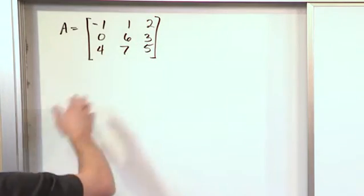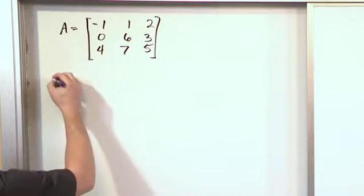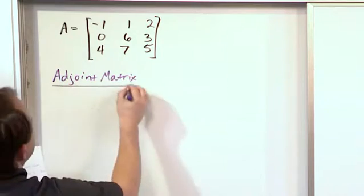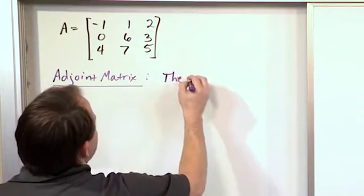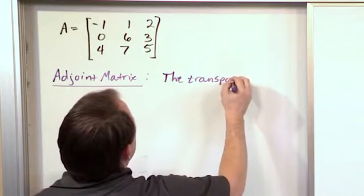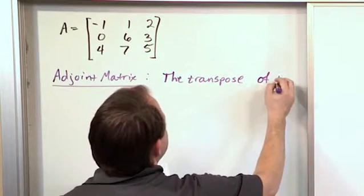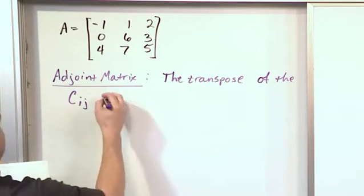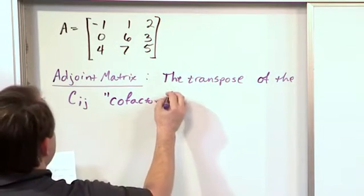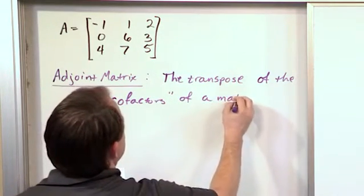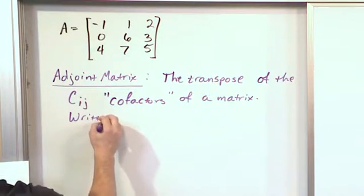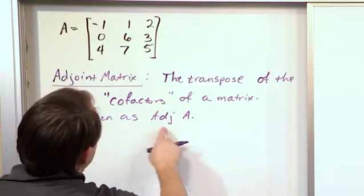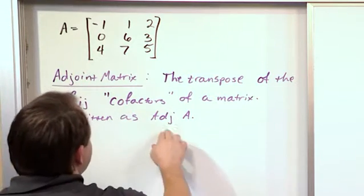Once we know all the cofactors of the matrix, we can define something called the adjoint matrix, which is something you will definitely need to learn in your linear algebra course. It is the transpose — which we've learned about quite a while ago — of the cofactor elements, which I'll call C-sub-ij. These are the cofactors everywhere in this matrix. This is written as adjoint A, adjoint B, or adjoint C, or whatever the name of your matrix is — you just put ADJ in front, and that means adjoint.